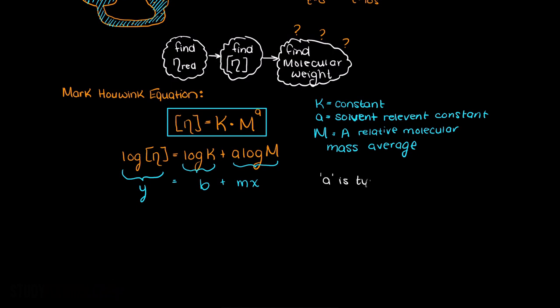The a value characterizes the solvent used. As a general rule of thumb, most of the time a remains between 0.5 and 0.8, where a good solvent has a value closer to 0.8 and a bad solvent has one closer to 0.5. K is just a constant that depends on the temperature, solvent, and solute relationship.